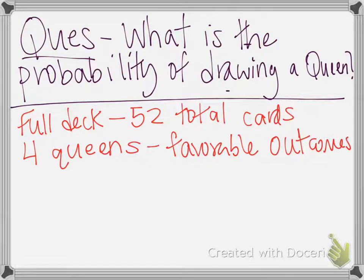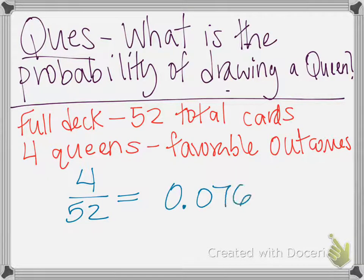And so using the classical approach, we take our favorable outcomes, and that's the 4, and we divide that by the possible outcomes, which are 52 cards total in the deck. And so we get a probability here of 0.0769 is the probability that when we pull a card from our deck, it will be a queen.